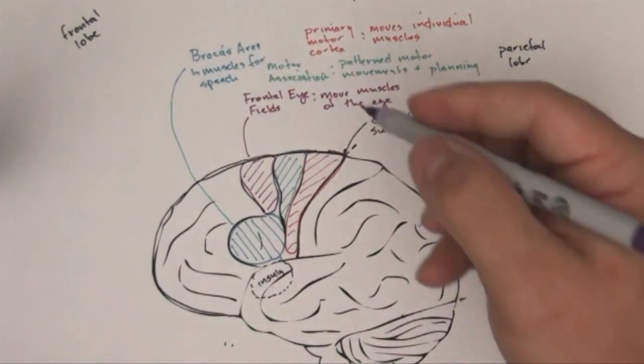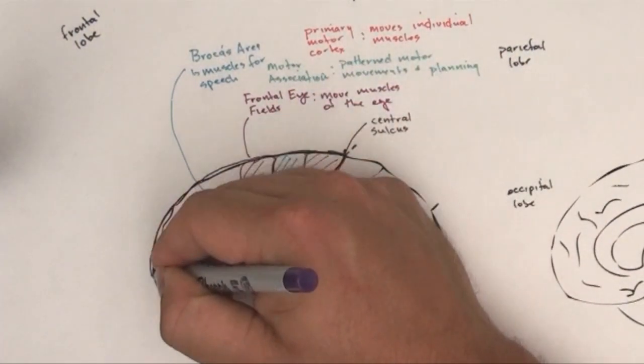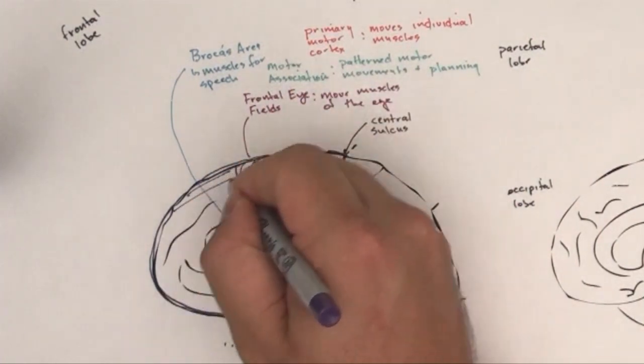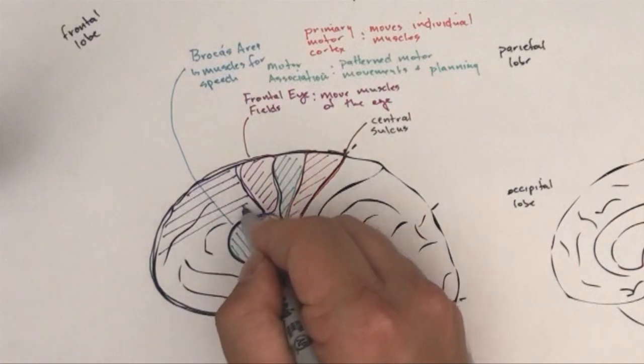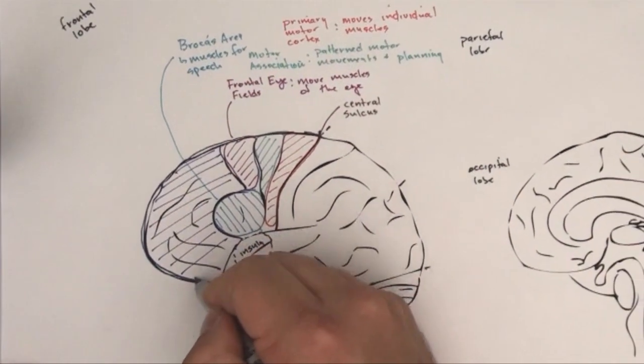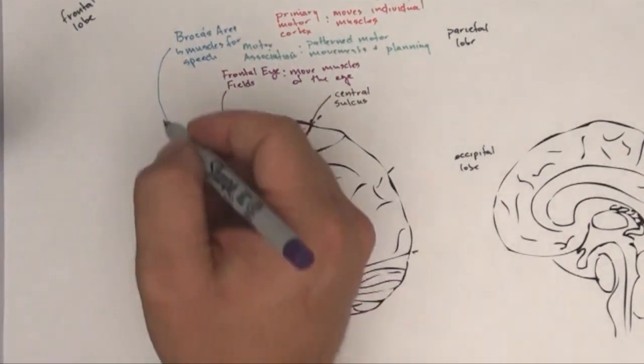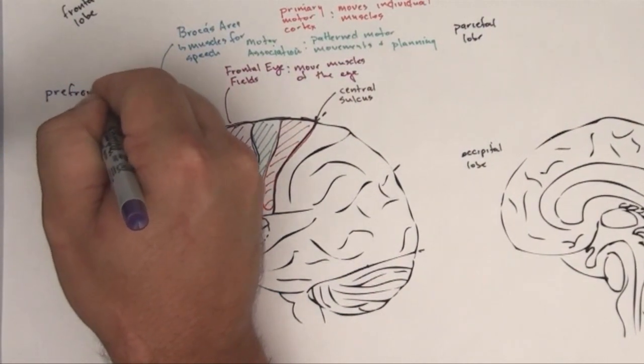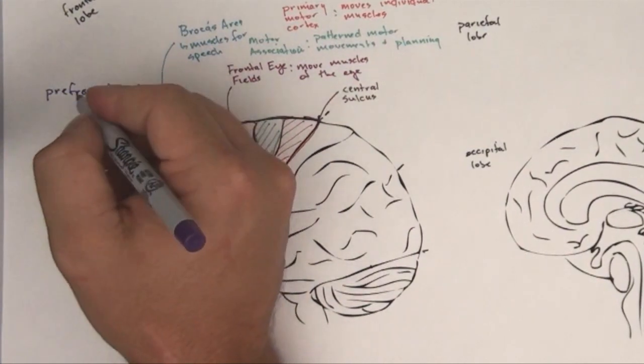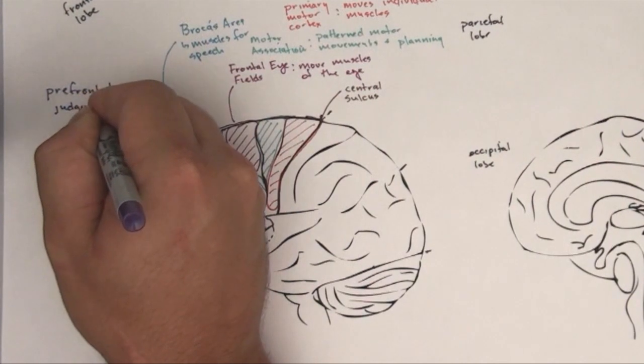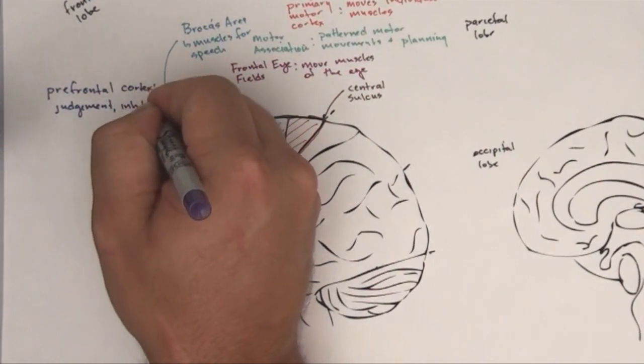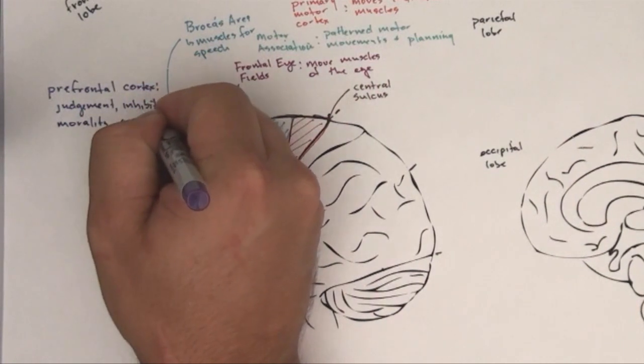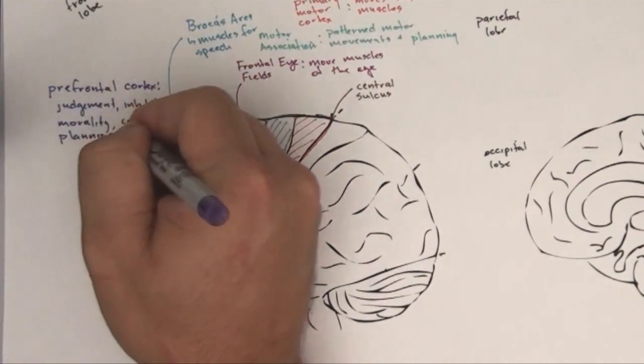Next let's move further forward. And we're going to put a lot of this together. This area is called Prefrontal Cortex. Prefrontal Cortex is involved in kind of personality, judgment, right and wrong, morality, inhibition, complex planning. I guess I said personality and haven't written it, so let's write that personality.